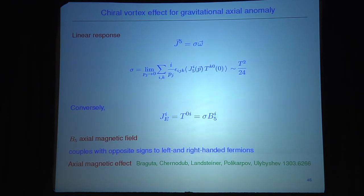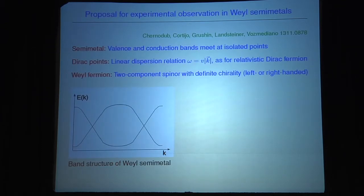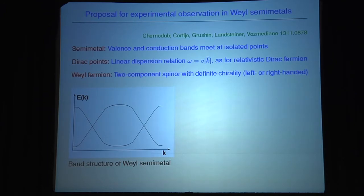A group of QCD physicists and Karl Landsteiner proposed this should lead to an axial magnetic effect which is possibly also observable. Their proposal is to consider the so-called Weyl semi-metals. I should also mention that here there is a very nice collaboration of people from QCD, string theory, and condensed matter physics — this demonstrates the virtue of this field in bringing together physicists from very different backgrounds.